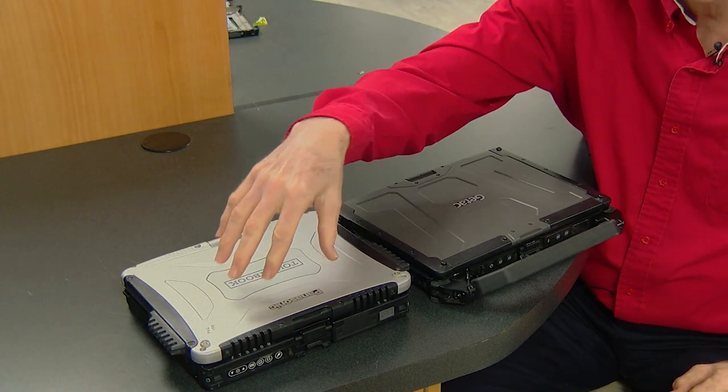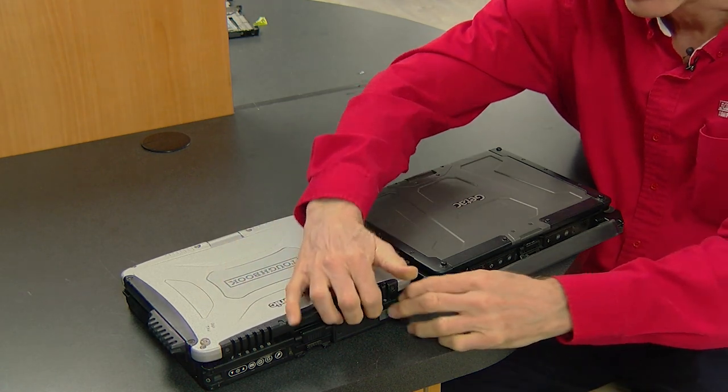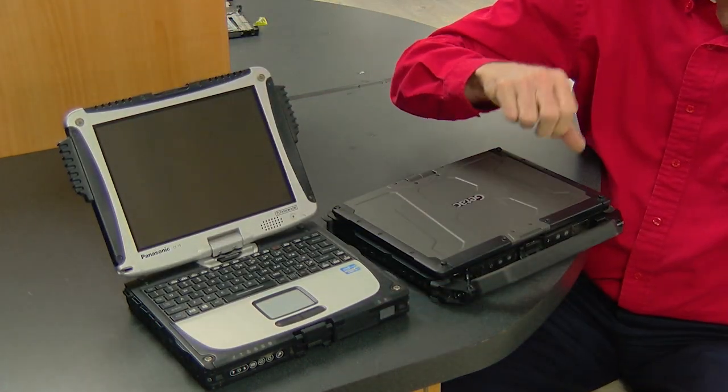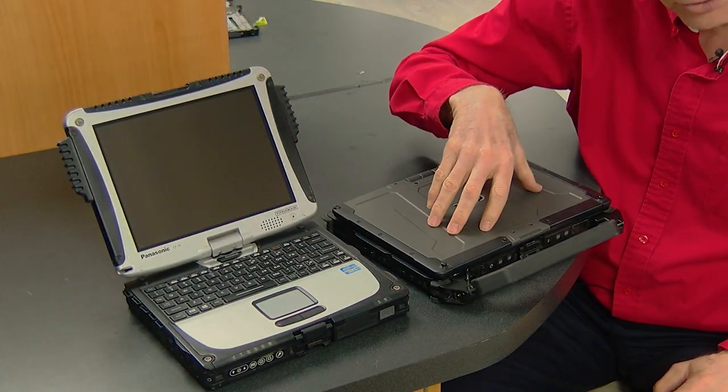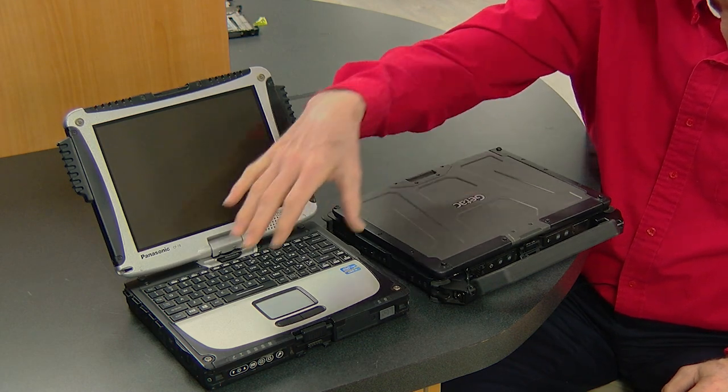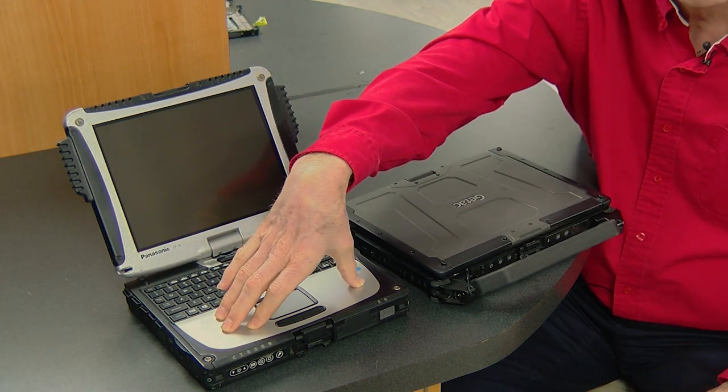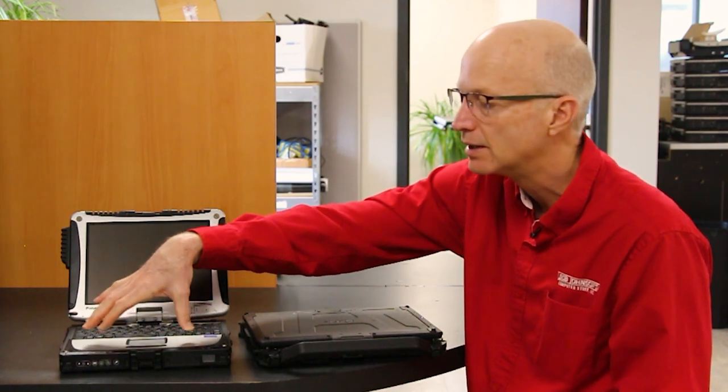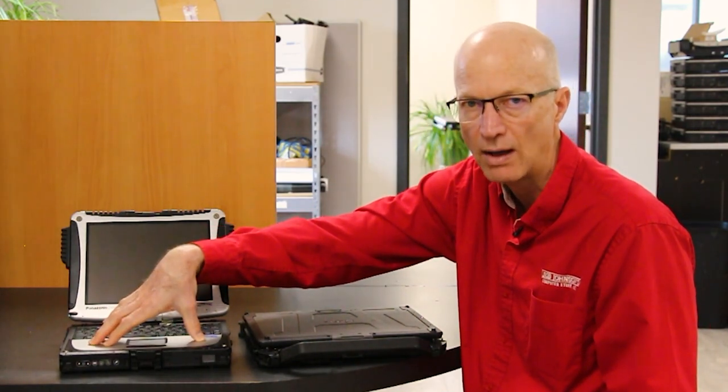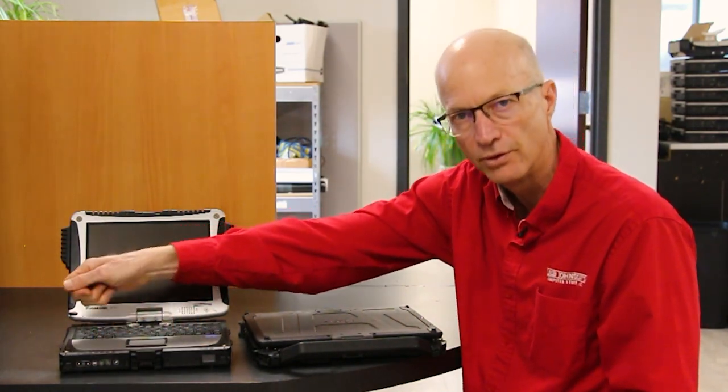Downside on the Panasonic, it only has one battery bay. The G-TAC has two battery bays, and this gives you 13 hours of battery life. The Panasonic, four, maybe five hours. And it's not hot-swappable, so you've got to turn the unit off to remove the battery.